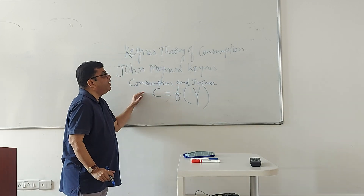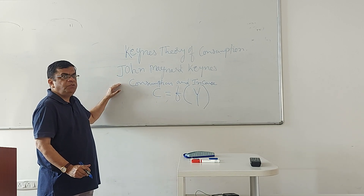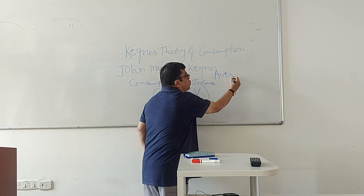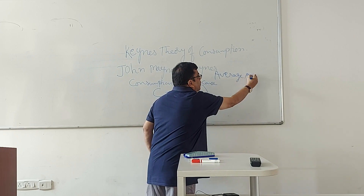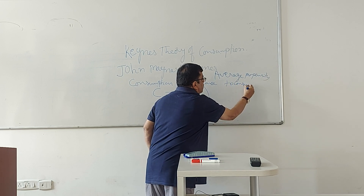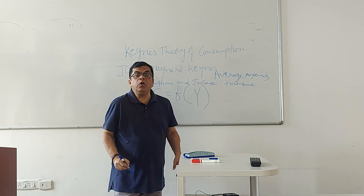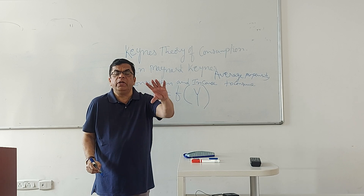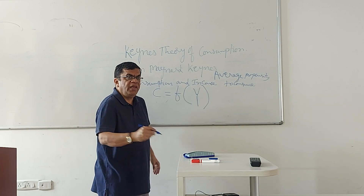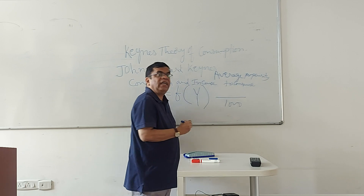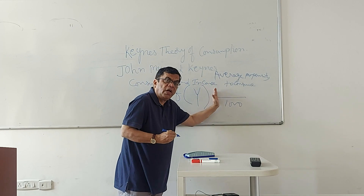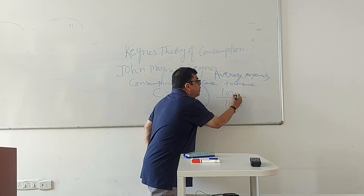In the process of explaining the theory of consumption, he talked about two concepts. The first is Average Propensity to Consume, which refers to the part of income devoted to consumption. For instance, if my income is 1,000 and I set aside 100 rupees for consumption, then my Average Propensity to Consume will be 100 divided by 1,000.